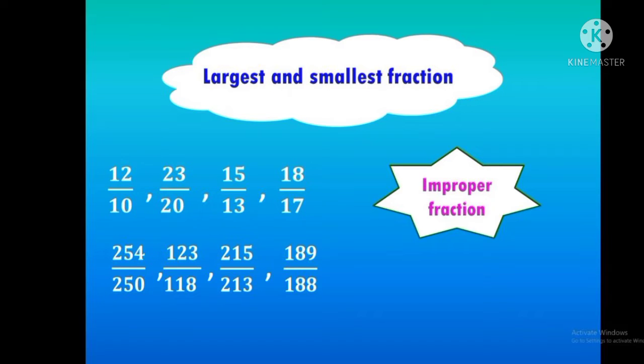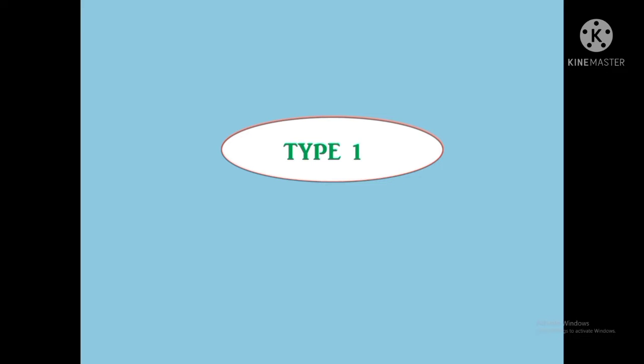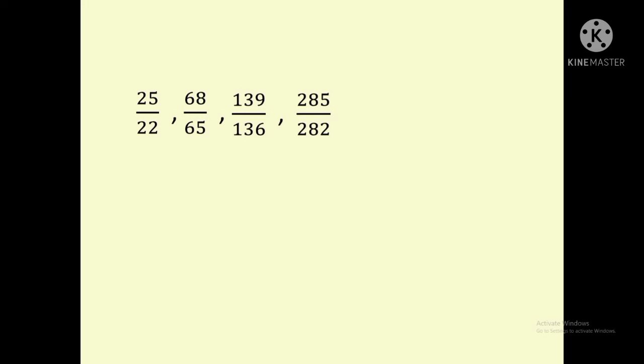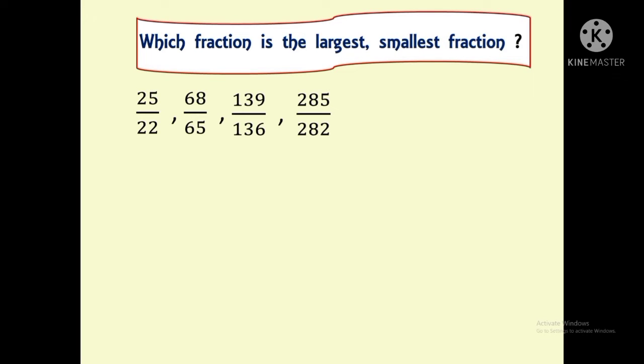Now let us move on to the trick. The first one is Type 1. Here are some fractions: 25 by 22, 68 by 65, 139 by 136, and 285 by 282. In this question, we are going to find which fraction is the largest and which fraction is the smallest.